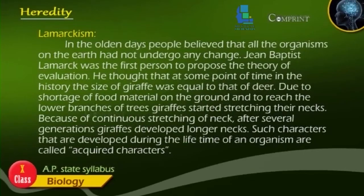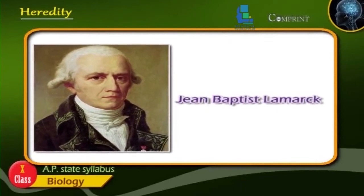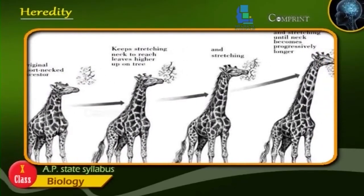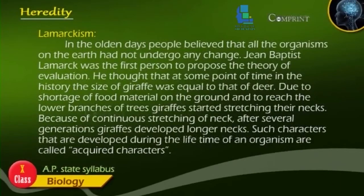Lamarckism. In the olden days, people believed that all organisms on earth had not undergone any change. Jean-Baptiste Lamarck was the first person to propose the theory of evolution. He thought that at some point in history, the size of the giraffe was equal to that of a deer. Due to shortage of food material on the ground and to reach the lower branches of trees, giraffes started stretching their necks. Because of continuous stretching of necks over several generations, giraffes developed longer necks. Such characters that were developed during the lifetime of an organism are called acquired characteristics.